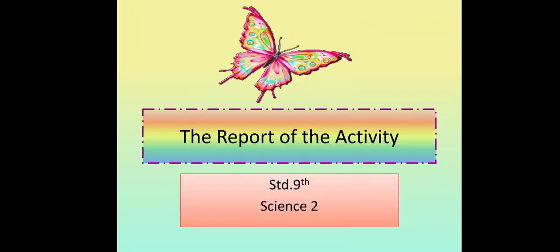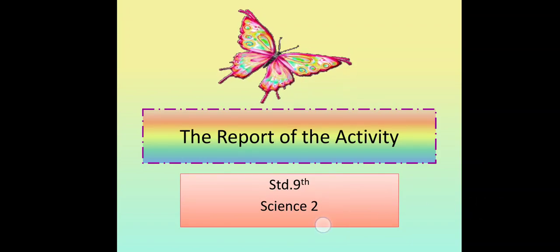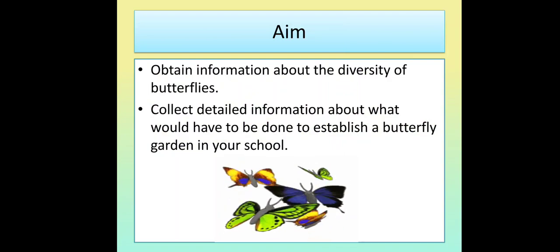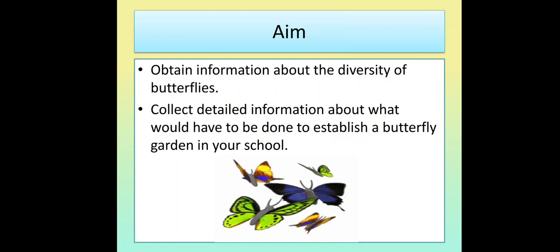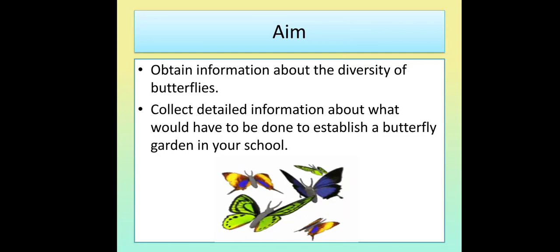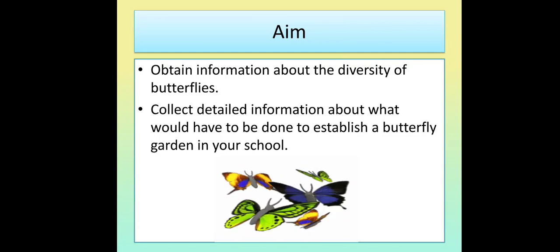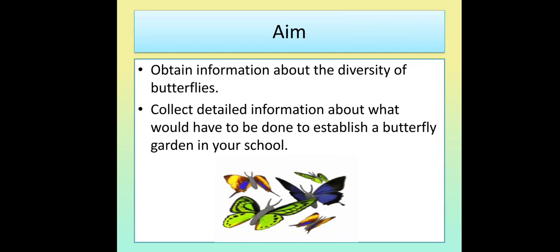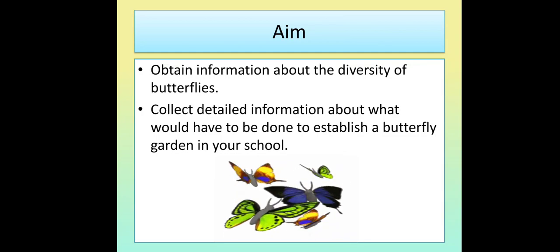In this video, we are going to study the report of the activity Standard 9 Subjects Science Part 2. The aim of the activity is to obtain information about the diversity of butterflies and collect detailed information about what would have to be done to establish a butterfly garden in your school.